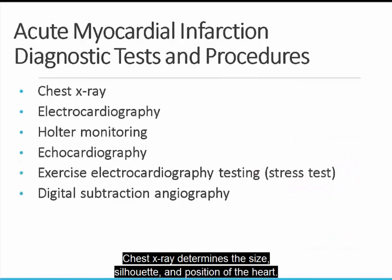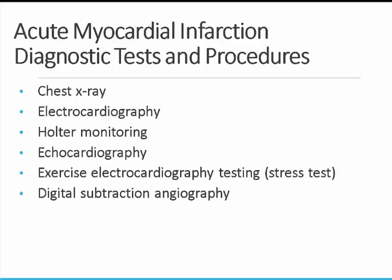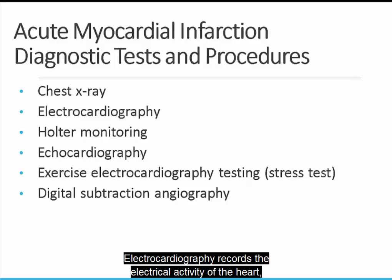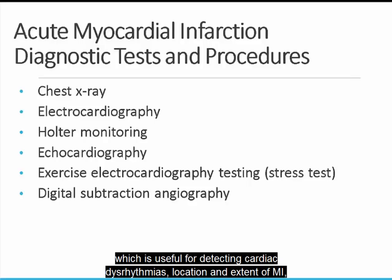Chest x-ray determines the size, silhouette, and position of the heart. Electrocardiography records the electrical activity of the heart, which is useful for detecting cardiac dysrhythmias, location and extent of MI, and cardiac hypertrophy, as well as the effectiveness of cardiac medications.